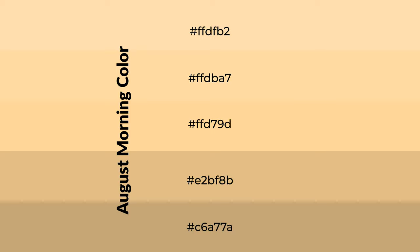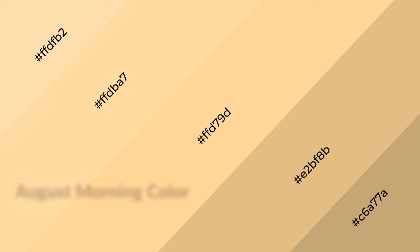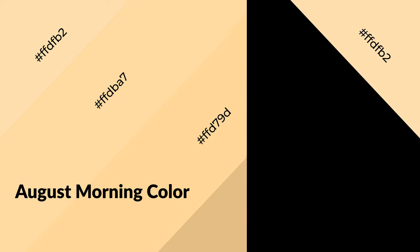To generate shades of a color, we add black to the color. Shades are used in patterns, 3D effects, and layers. Shades create depth and drama. August Morning is a warm color and it emits cozier and active emotions.